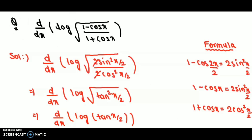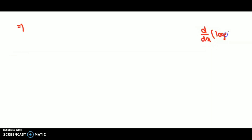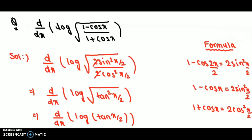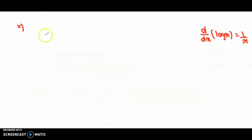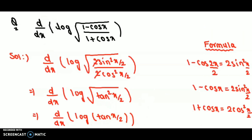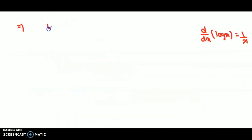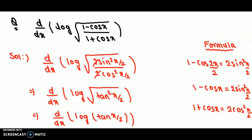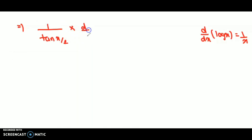Now we have to differentiate the log function. The formula is: the derivative of log x is 1 over x. Using this formula, differentiating log of tan(x/2) gives 1 over tan(x/2). But notice we also have the inner function tan(x/2), so we need to differentiate that too — this is the chain rule.